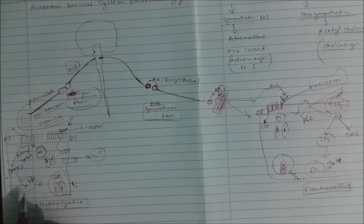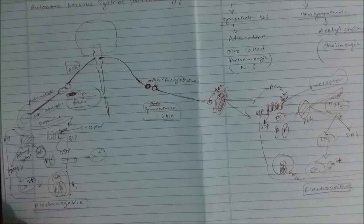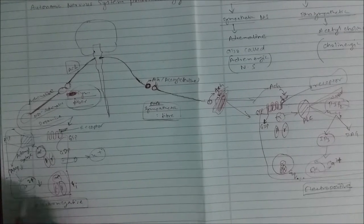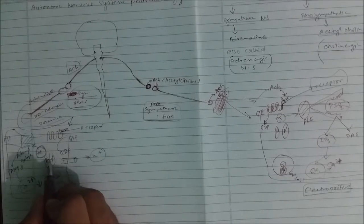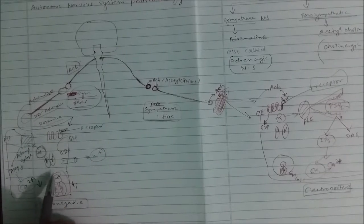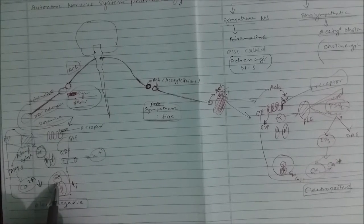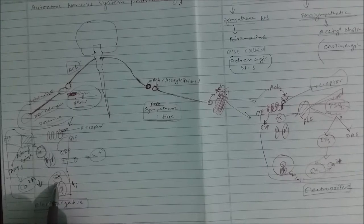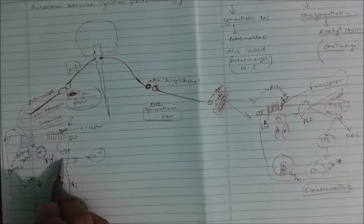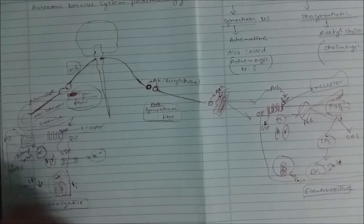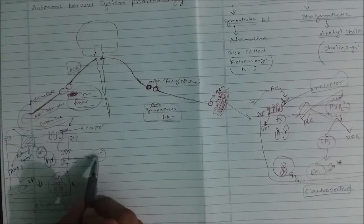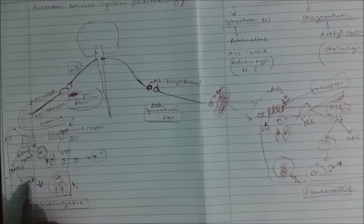Once adenyl cyclase gets inactivated, the normal conversion of ATP into cAMP (cyclic adenosine monophosphate) decreases. Normally, cAMP functions to increase the calcium concentration inside the cell, but since this conversion goes down, the calcium concentration inside the cell also goes down.